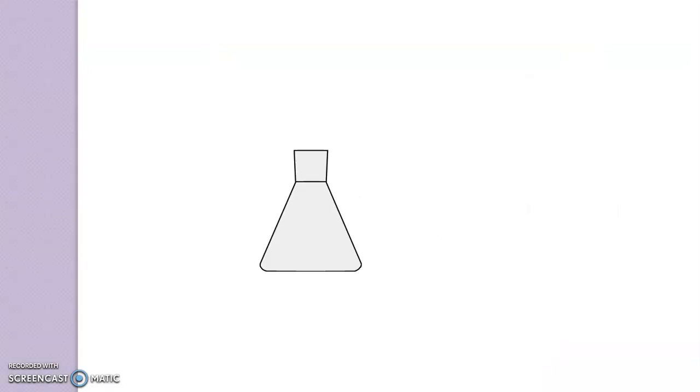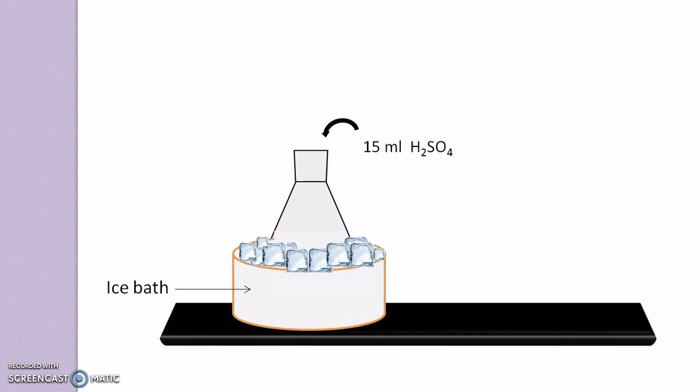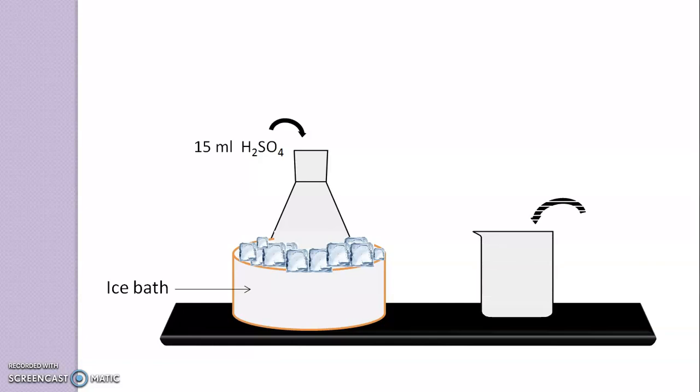Procedure: Take 15 ml of concentrated H2SO4 in a flask, then keep this flask in an ice bath so it achieves the temperature of 4-5 degree centigrade, then take another beaker to which you add 3.7 gram of resorcinol.